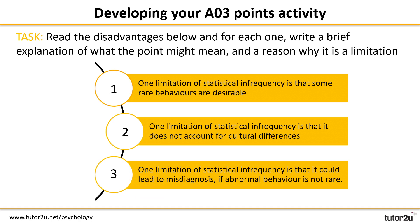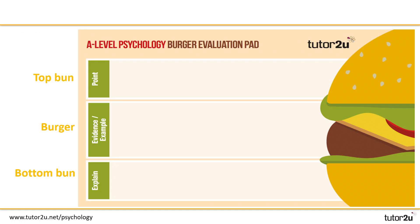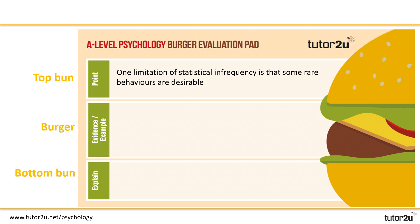Let's start with developing the three disadvantages on the screen. For each one, consider and write a brief explanation of what the point in bold might mean and a reason why this is a limitation. Write your answers down and pause the video here for five minutes while you complete the task. You can see on the screen we've got the burger template from the last session, which is a really good writing tool that will help you to develop your structure in your evaluation.